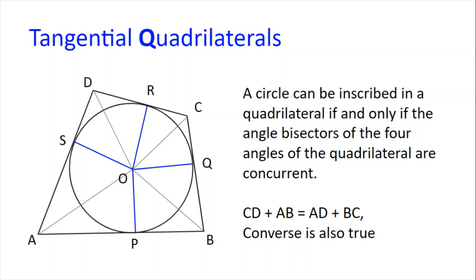The same can be done with angle B, angle C, and angle D. From this, we also get that side length CD plus side length AB is equal to side length AD plus side length BC, which is known as Pitot's theorem. The converse is also true: if CD plus AB is equal to AD plus BC for some quadrilateral ABCD, that quadrilateral is tangential.